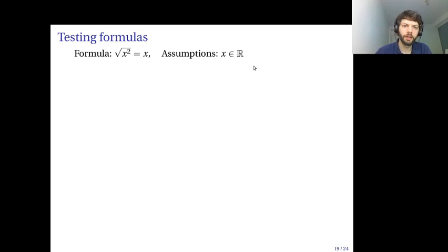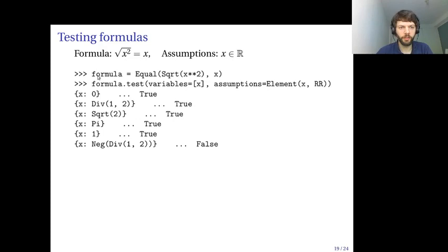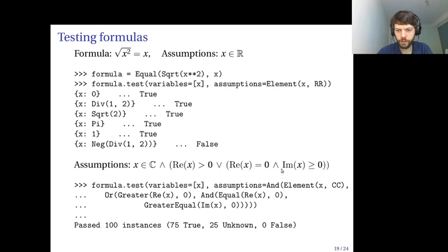This is used for testing formulas. Let's say you want to test the formula square root of x squared equals x with the assumption that x is a real number. You can enter this formula in Python and use the test method. You write formula.test, and you specify the variables, and you give the assumptions. Then the code will plug in random values and check if the formula is valid. It's valid for the first few values, but it's not valid for minus one half. In fact, it's not valid for any negative numbers. So we find that the formula is not correct with these assumptions. If we add correct assumptions, we could, for example, specify these assumptions, then the test code passes.